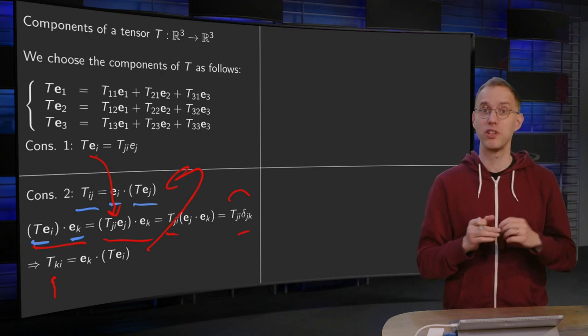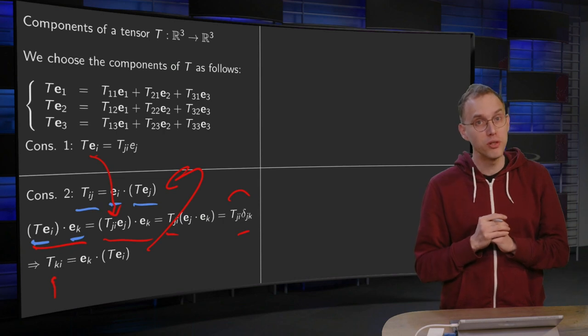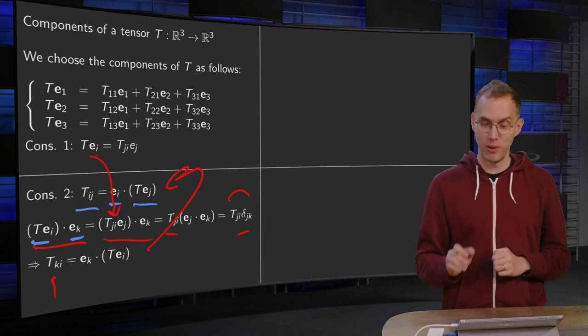So TIJ equals EI inner product T of EJ, second consequence, important, we'll use it a lot in future derivations, so learn this one by heart.